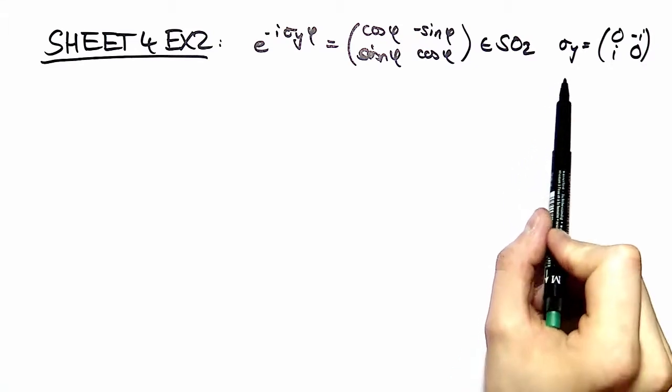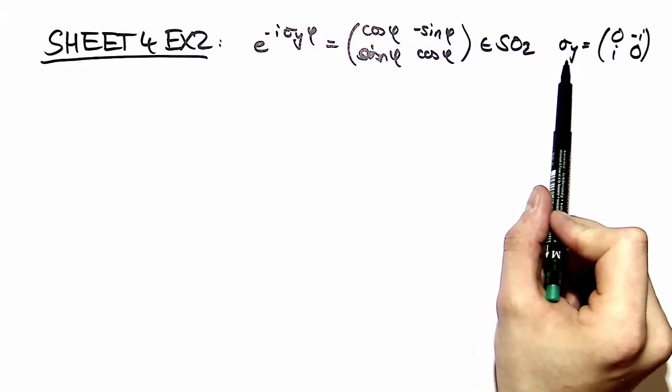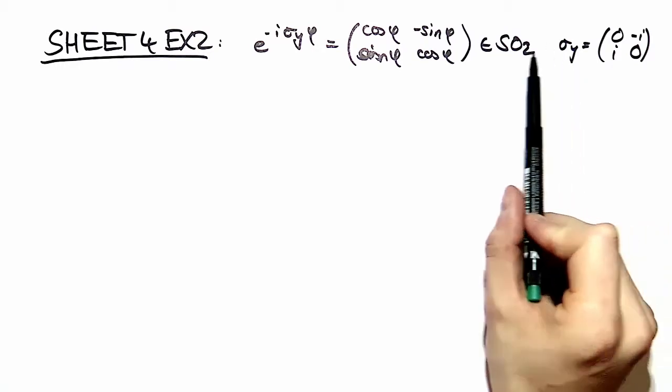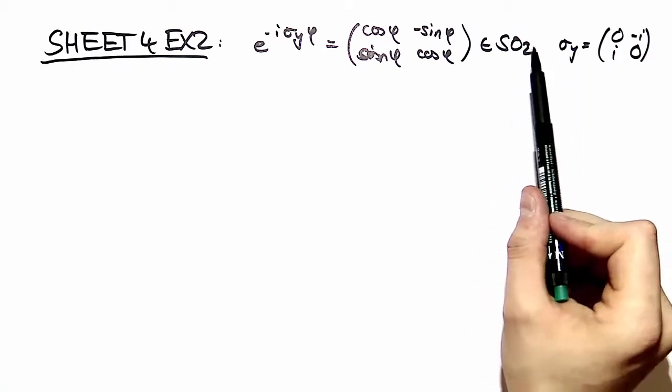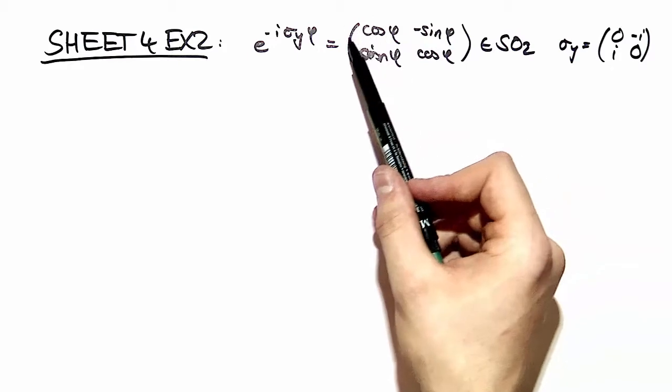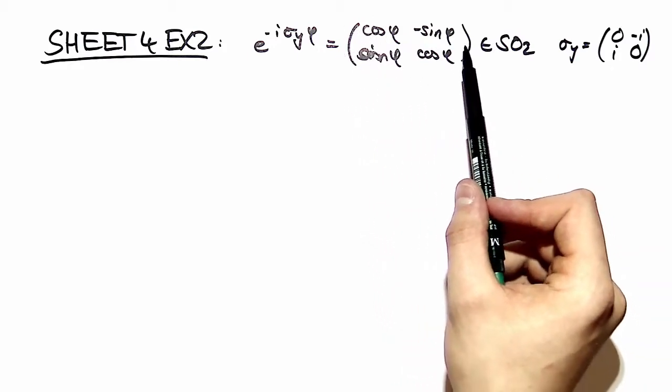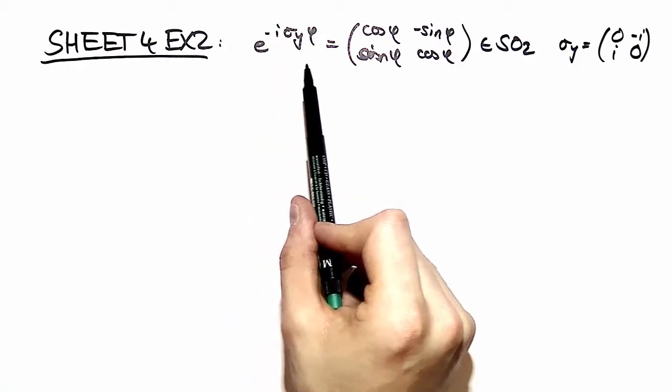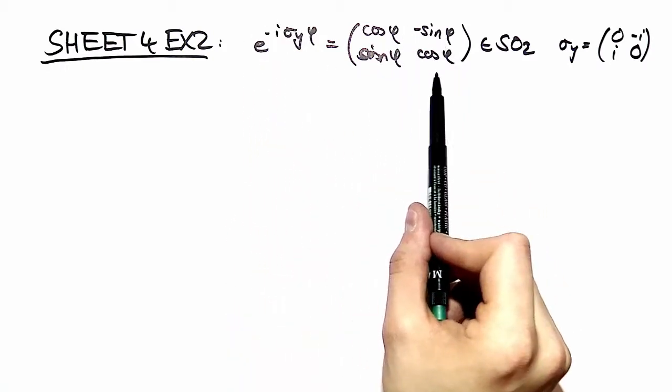We have the Pauli matrix sigma y defined over here and we show that sigma y generates SO2. SO2 consists of those matrices, so we want to see if we can write sigma y in the exponential like this and that this actually yields that matrix over here.